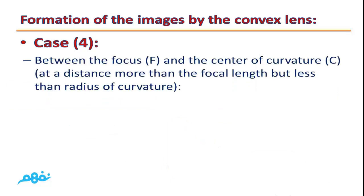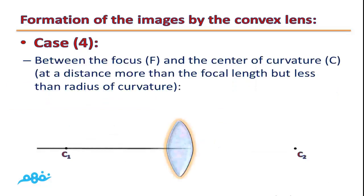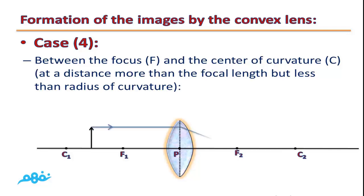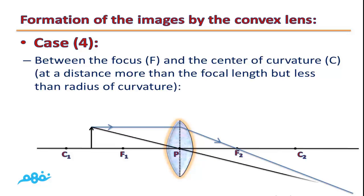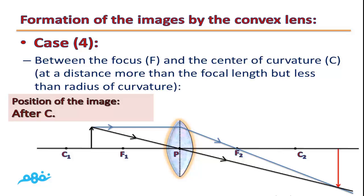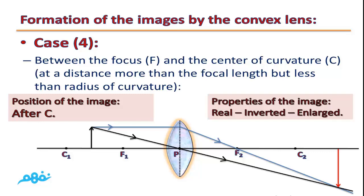Case 4: The object is located between the focus and the center of curvature, at a distance more than the focal length but less than the radius of curvature. The first light ray is parallel to the principal axis and refracts passing through the focus. The second light ray passes through the optical center without refraction. The image is formed beyond C, and the image is real, inverted, and magnified.